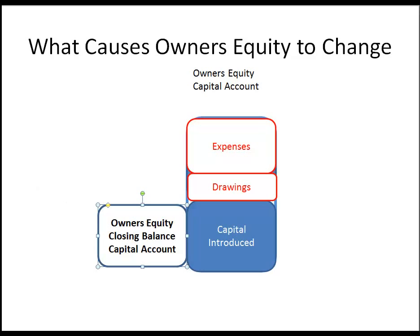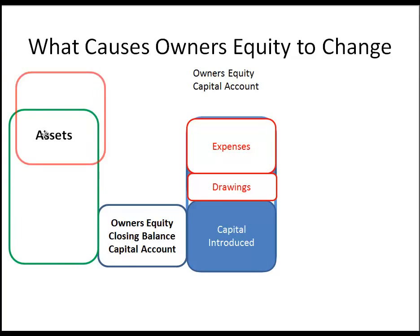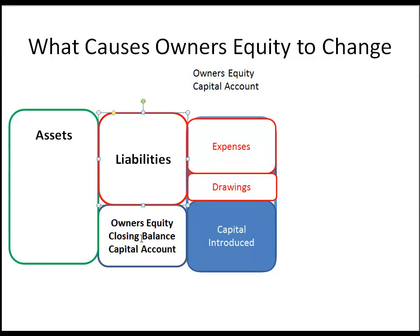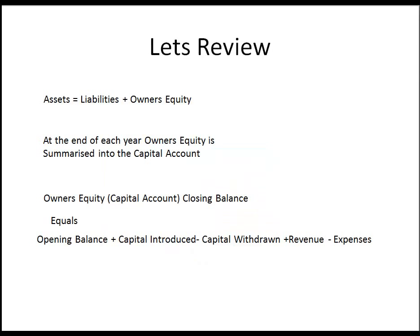Putting that back into the terms of the accounting equation — assets equals liabilities plus owner's equity — we can see how owner's equity comes about. To review: at the end of each year, owner's equity is summarised in the capital account. The closing balance equals the opening balance plus capital introduced, less capital withdrawn (drawings), plus revenue minus expenses. And revenue minus expenses is profit.